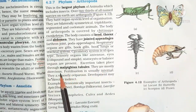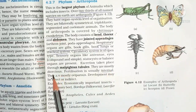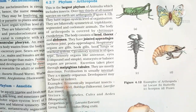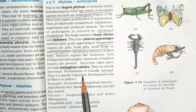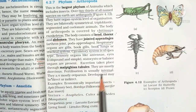They are mostly dioecious. Fertilization is usually internal. They are mostly oviparous — egg-laying. Development is either direct or indirect.